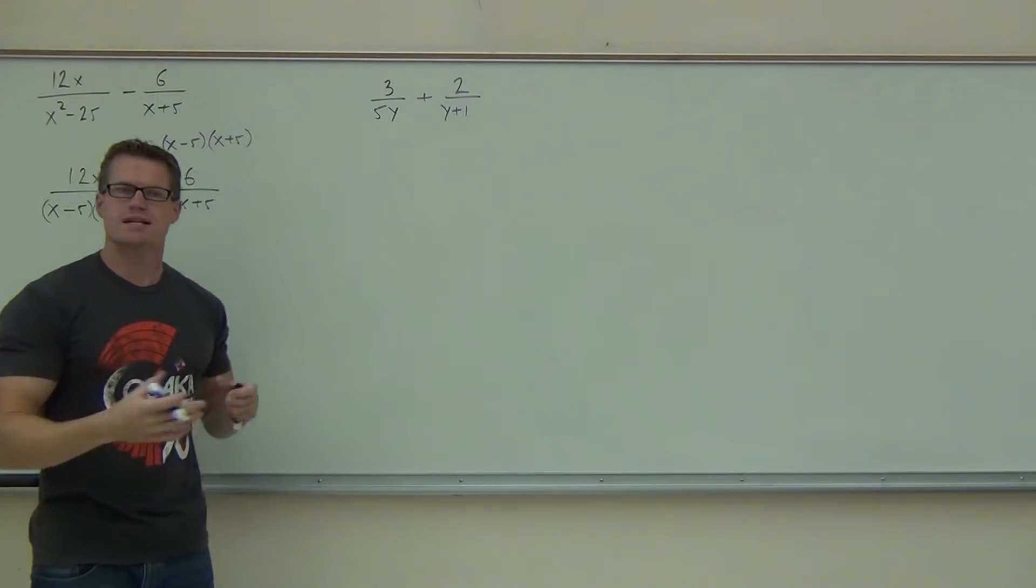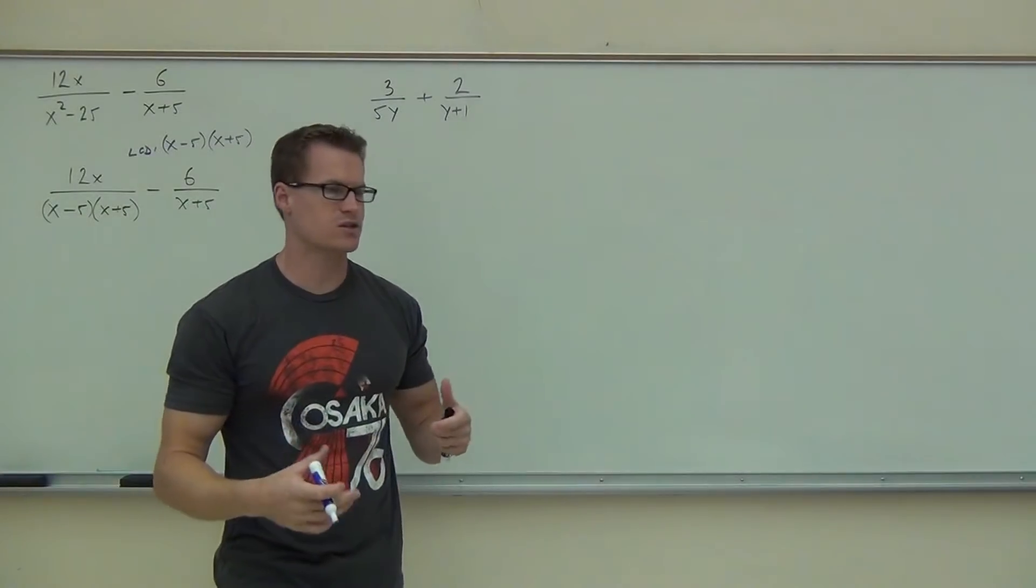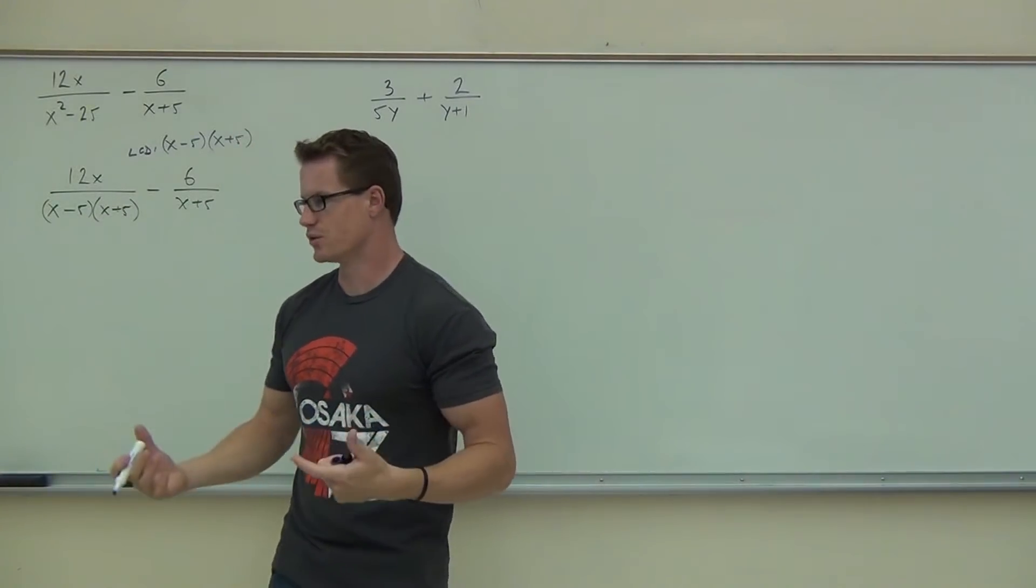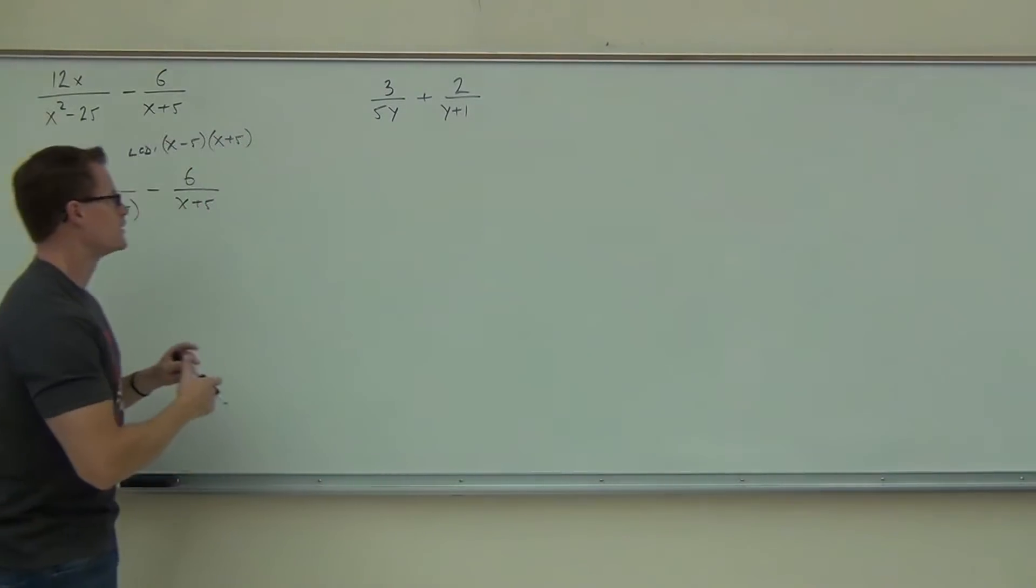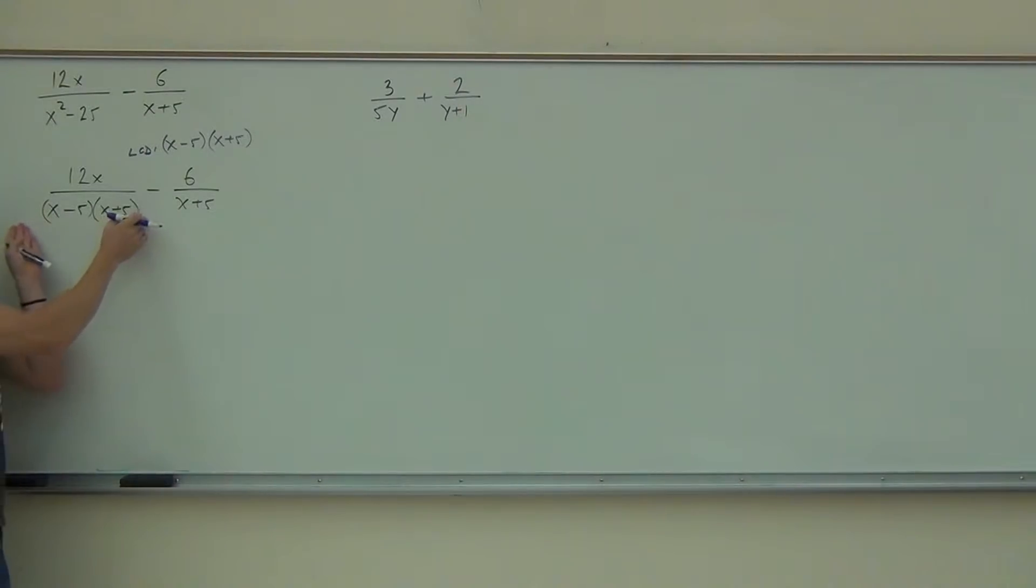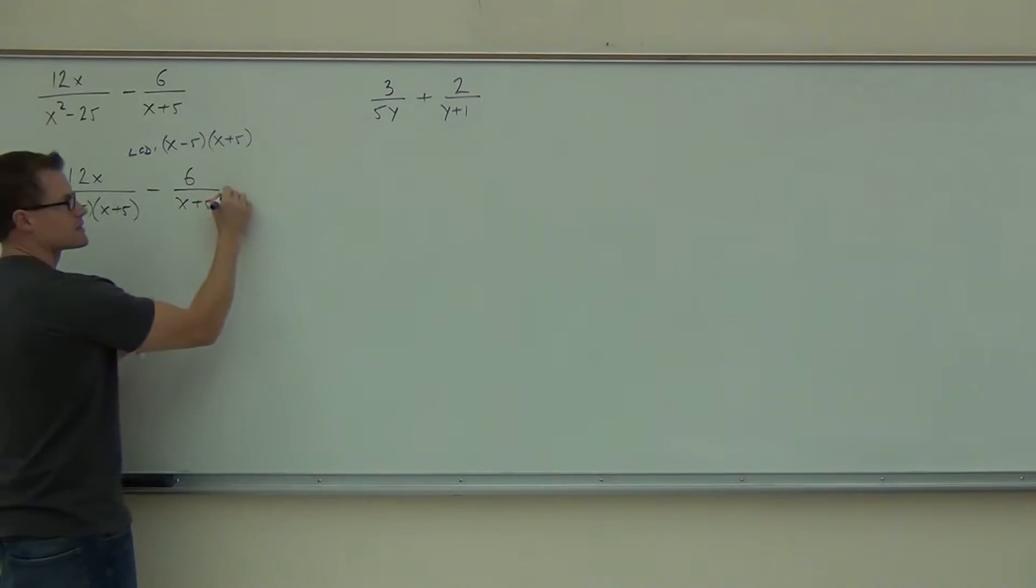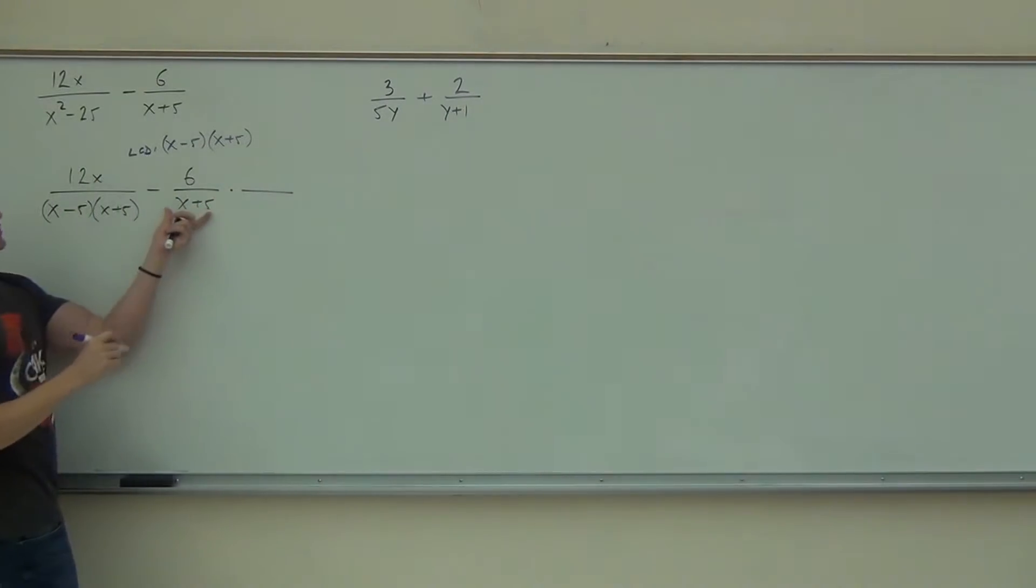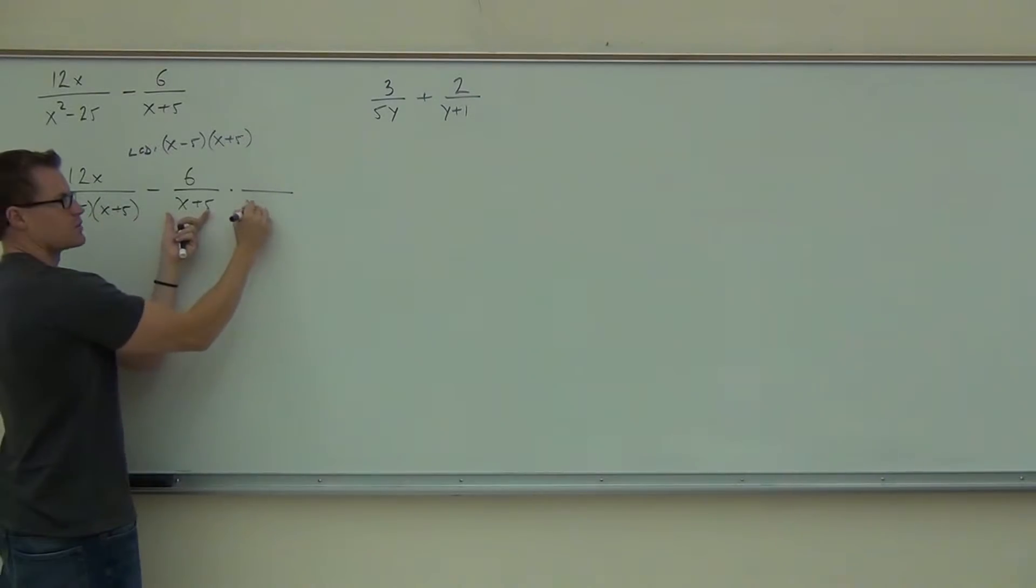Now we're going to use that to make some equivalent rational expressions. That means fractions of the same value, it just looks a little different. We're purposely unsimplifying here. On the left-hand side, I already have the LCD down there. That's great. I don't need to do anything to that fraction. On the right-hand side, though, I have X plus 5. That's great. But what else am I missing? X minus 5. And that's what I'm going to be multiplying by.